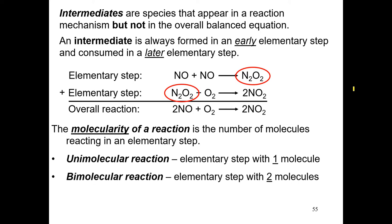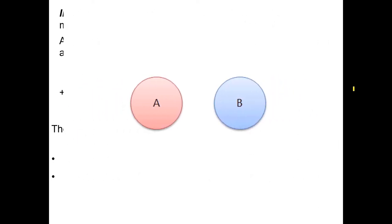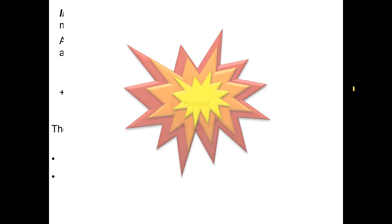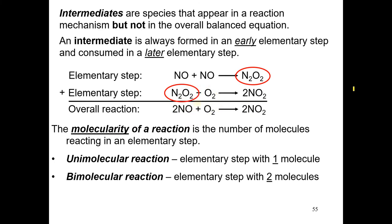We also have bimolecular reaction. This is an elementary step in which two molecules collide, such as this animation you see here, A and B collide, and they produce the product. I think based on what we studied before about collision theory, we would expect that a large number of elementary steps are going to be typically bimolecular reactions.